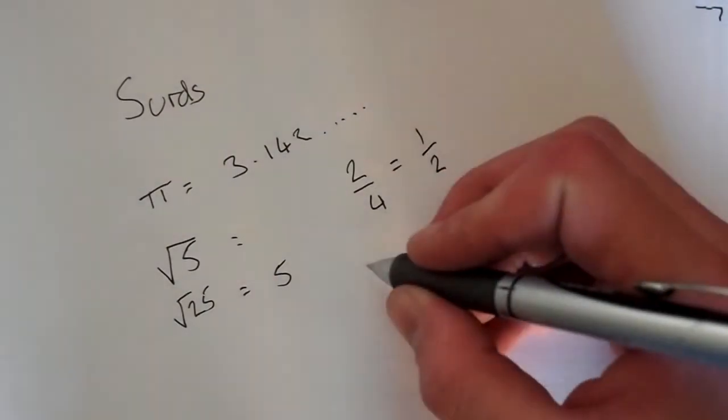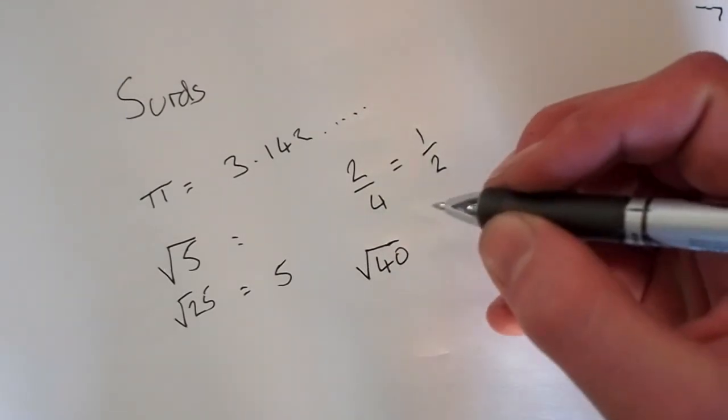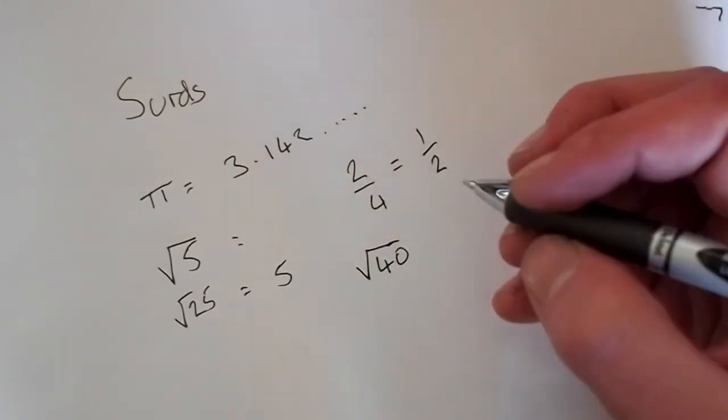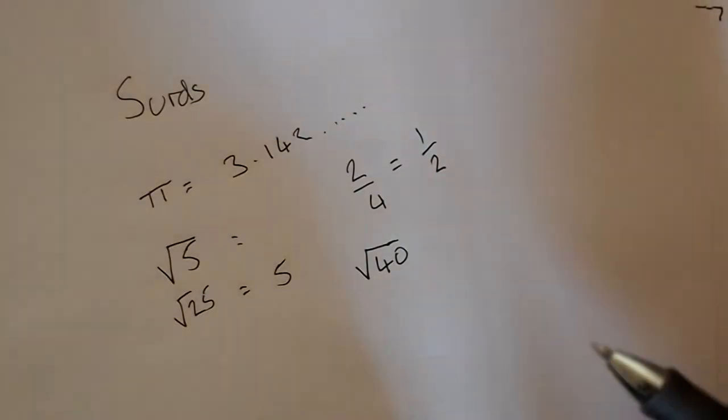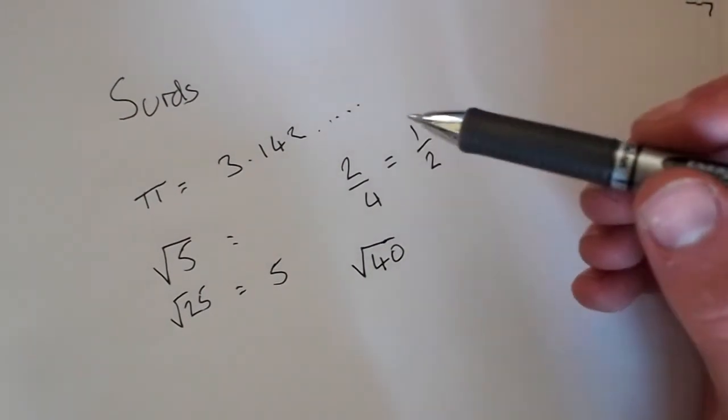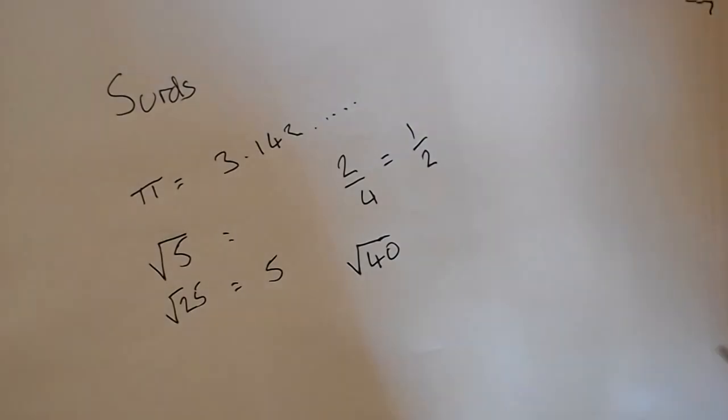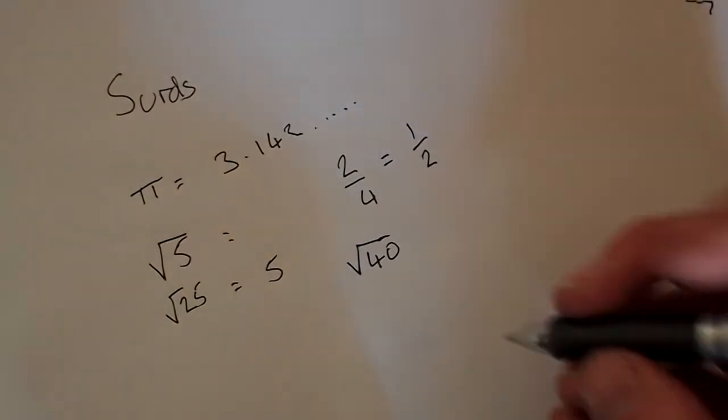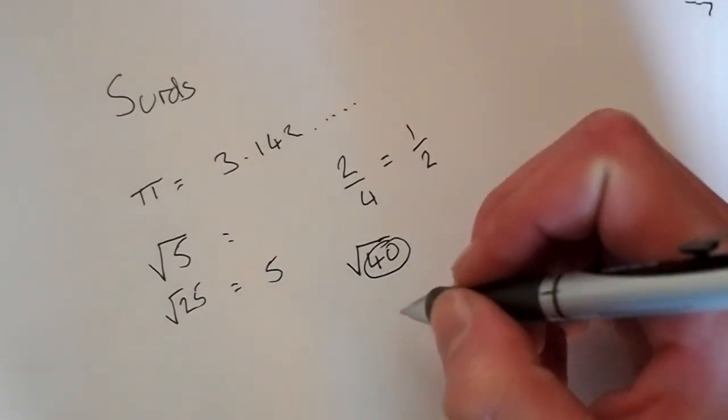So for example, if we took the square root of 40, this number can't be written as an exact decimal, which is why it's a surd. But we can simplify it. It's like the two quarters, it's not in its simplest form. So remember we're not trying to solve its exact figure, we're just trying to get it so that the number in here is smallest as possible.